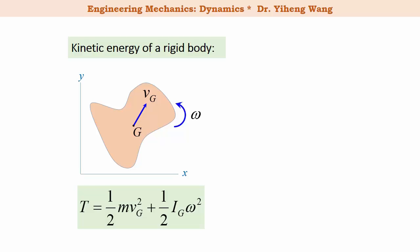This equation clearly captures contributions from both translation as well as rotation, and is the general equation that applies to all three cases of planar motion. For the case of pure translation, the angular velocity omega is zero, so the kinetic energy simply equals one-half m vG squared — the same as the kinetic energy for a particle.